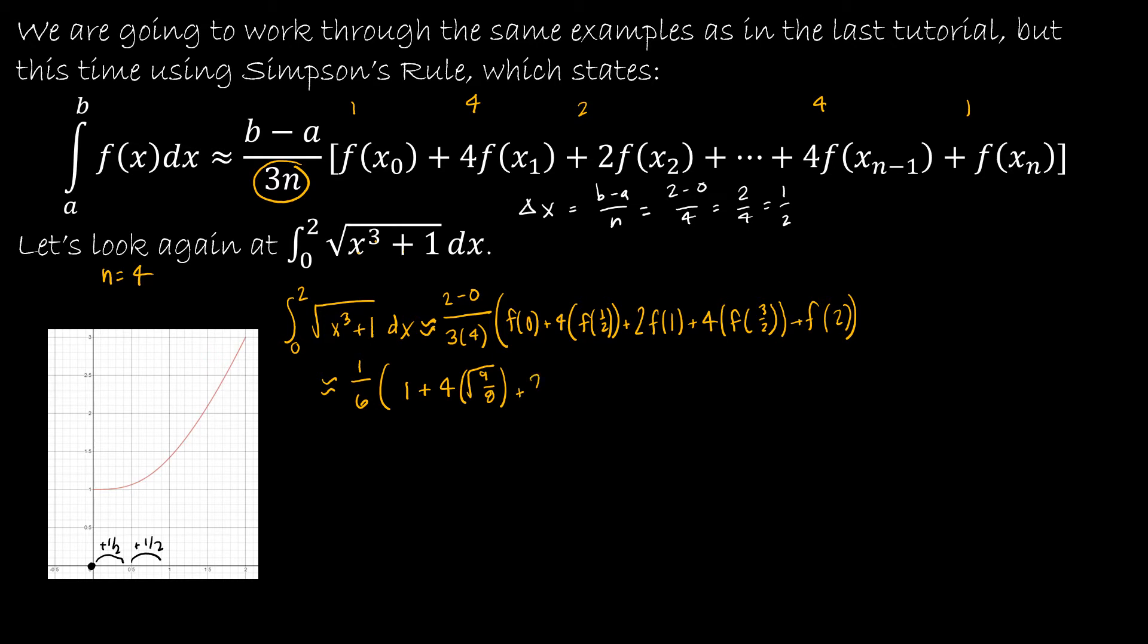Then 2 times f of 1: 1 cubed is 1 plus 1, so this is 2 times the square root of 2. Then 4 times f of 3 halves: if I cube 3 halves, I get 27 over 8. If I add 1 to that, I get 35 over 8, and that's the square root. Then f of 2: 2 cubed is 8 plus 1 is 9. The square root of 9 is 3.